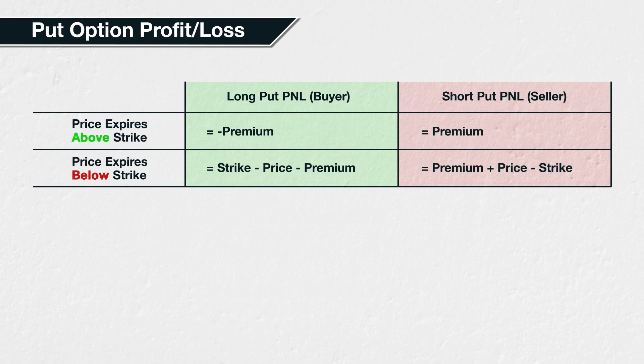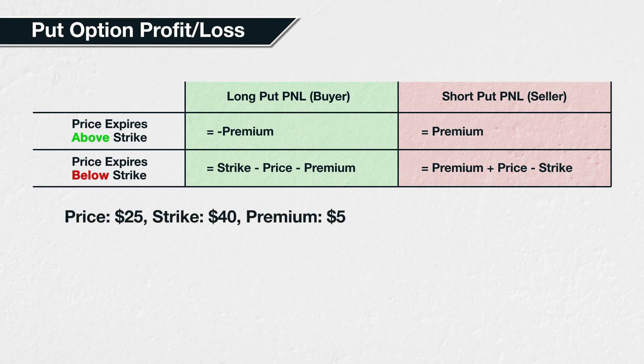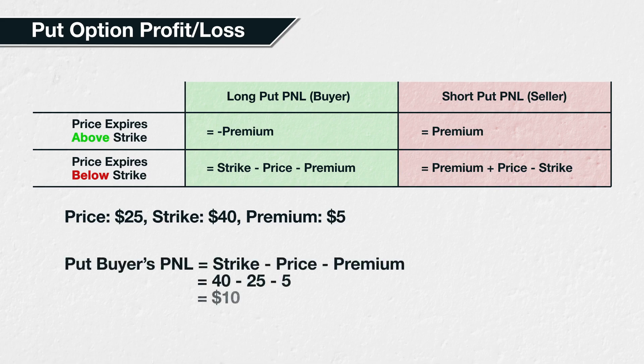As a quick PNL example, assume a trader buys a put option with a strike price of $40 and pays a premium of $5 per share. What is the profit and loss for the buyer and seller if the price at expiry is $25? We have a price of $25, strike of $40, premium of $5. As the price at expiry of $25 is below the strike price of $40, the put has some value at expiry, so we will use the bottom row of formulas. The buyer of the put option has a profit or loss of strike minus price minus premium, or $40 minus $25 minus $5, which equals $10.